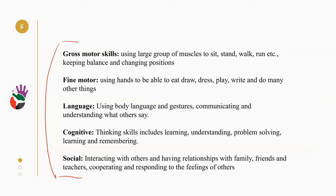For example, gross motor skill involves motor planning and gross coordination. Fine motor skill includes static or dynamic tripod grasp, hook grasp, and power grasp. Language involves receptive and expressive language and communication. Cognitive work includes recognition and visual perception. Social interaction, and ultimately self-regulation, is what we are focused on with children with Down syndrome.